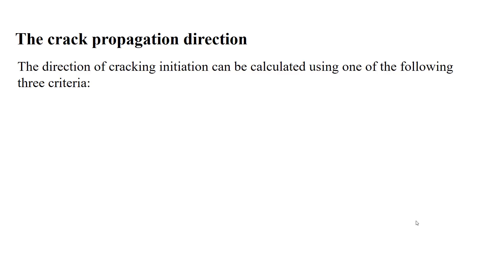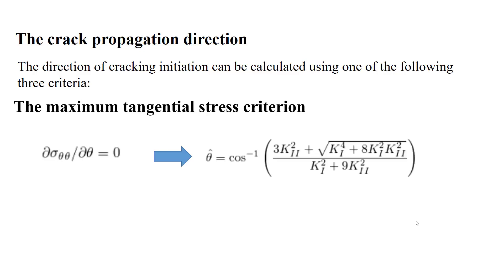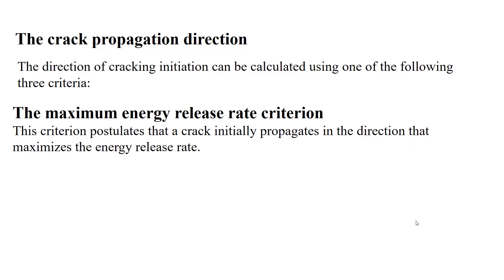There are three criteria in Abaqus to predict the direction of crack propagation. In the first criterion it is assumed that the crack propagates in a direction that the maximum tangential stress happens. We can use this formula based on K1 and K2 to calculate the angle between the crack propagation direction and the crack plane.